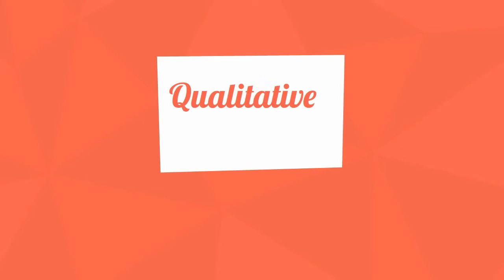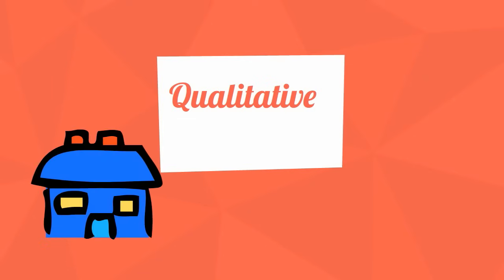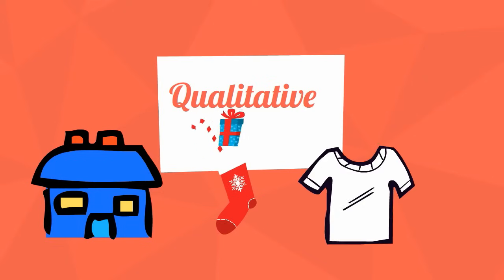Qualitative data is descriptive or observational and uses words. For example, the color of a house, the smell of a sock, or the texture of a shirt.